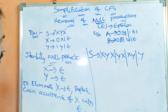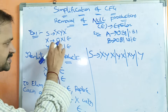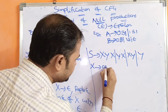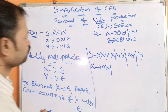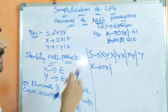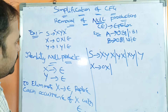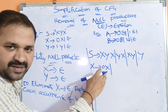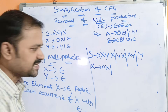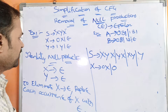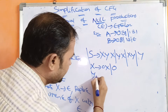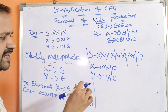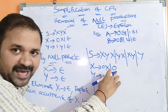For the second production, X produces 0X. We write this as-is, then replace X in the right-hand side with epsilon: 0·epsilon is nothing but 0. So X produces 0X or 0. The production Y implies 1Y or epsilon remains for now. We have now eliminated X implies epsilon from the grammar.